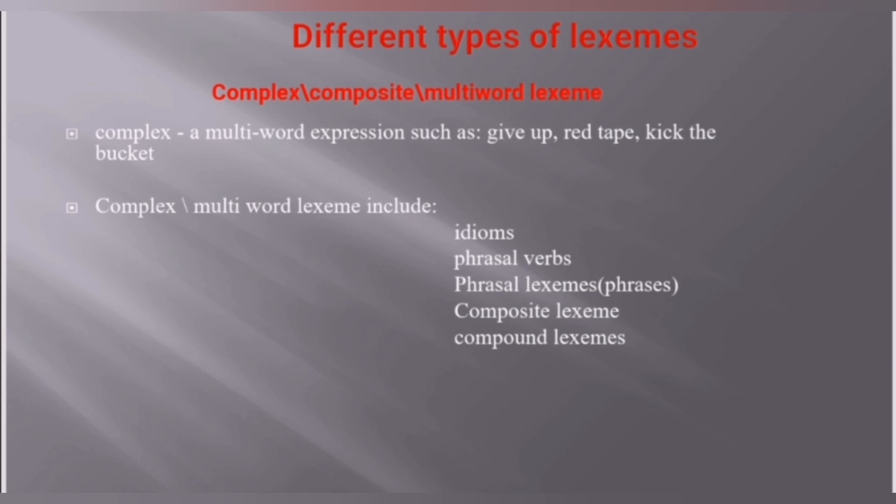Although there are more words, it is a single mechanism. Complex multi-word mechanisms include idioms, phrasal verbs, phrasal mechanisms, phrases, composite mechanisms, and compound mechanisms. Now let's see further types.